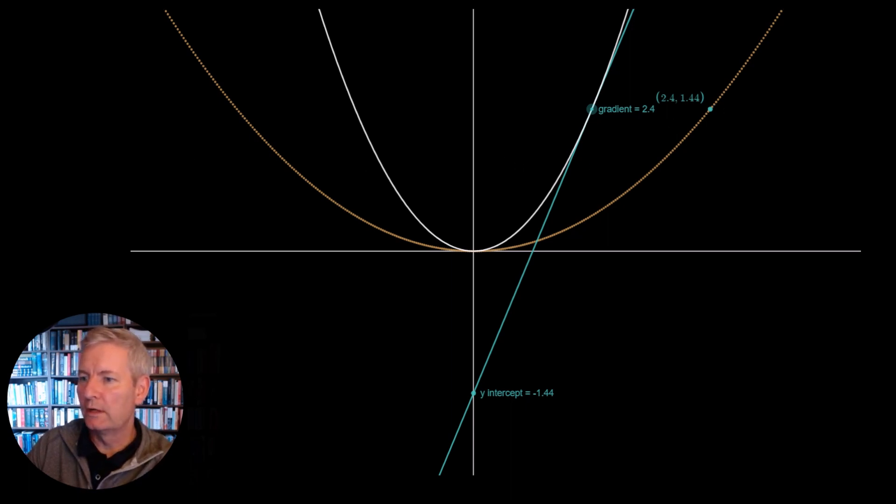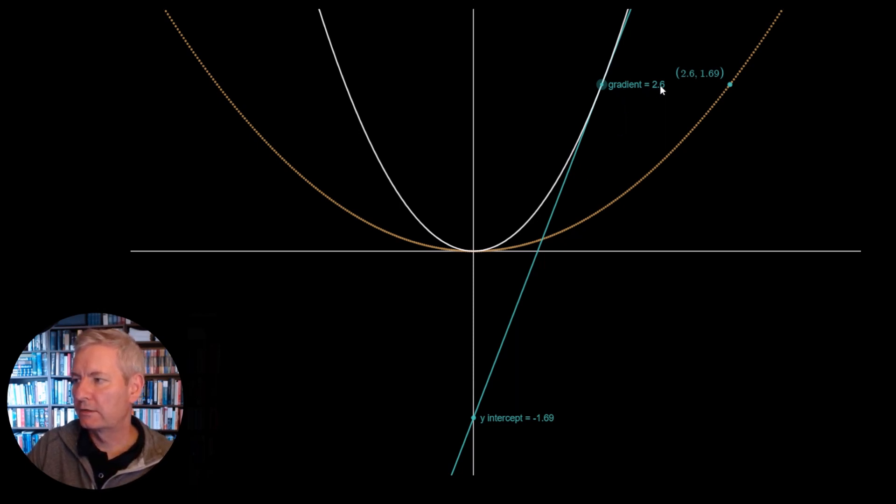So that's just for one point. If I was to move it up to some other point, we can see here that the gradient is 2.6. So therefore, the x-component of the Legendre Transform is 2.6. The y-intercept is minus 1.69. So the y-component of the Legendre Transform function is 1.69.